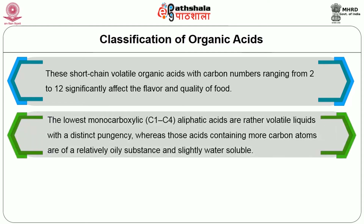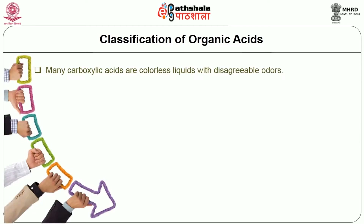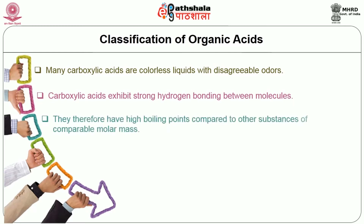The lowest monocarboxylic aliphatic acids are rather volatile liquids with a distinct pungency, whereas those acids containing more carbon atoms are of a relatively oily substance and slightly water soluble. In comparison, dicarboxylic acids are colorless solids with melting points at about 100 degrees centigrade. All these acids form somewhat soluble metal salts and esters suitable for gas chromatography and HPLC analysis. Many carboxylic acids are colorless liquids with disagreeable odors. Carboxylic acids exhibit strong hydrogen bonding between molecules and therefore have high boiling points compared to other substances of comparable molar mass.